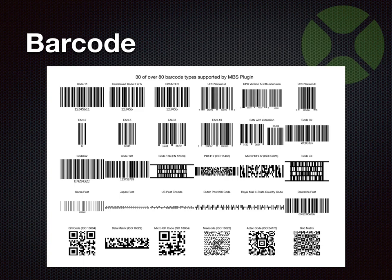This is a poster I made showing about 30 barcodes you can use in Xojo. The plugin actually supports 80 different types, but those are the most common. So if you need anything like Data Matrix or QR code, you can use our plugin.